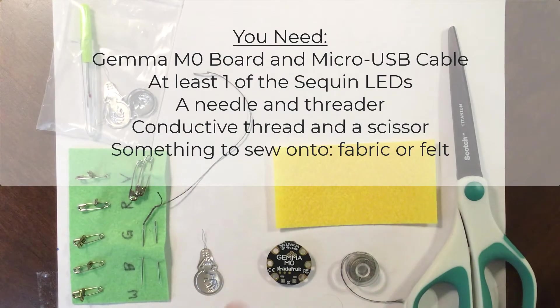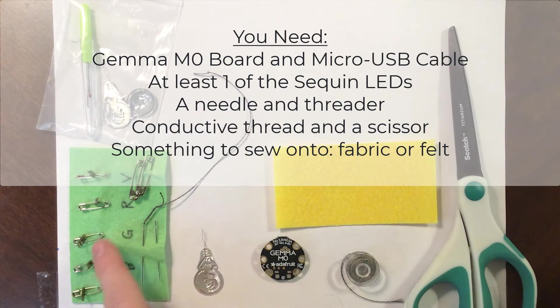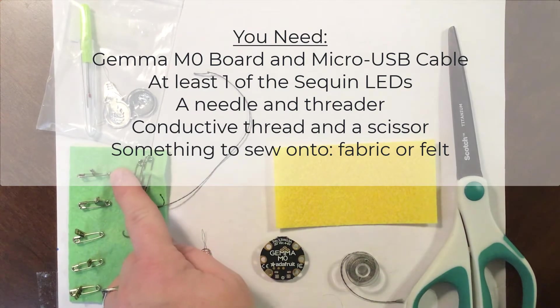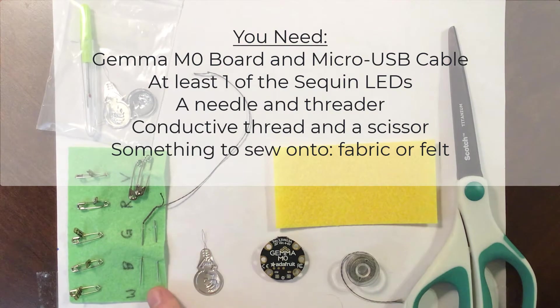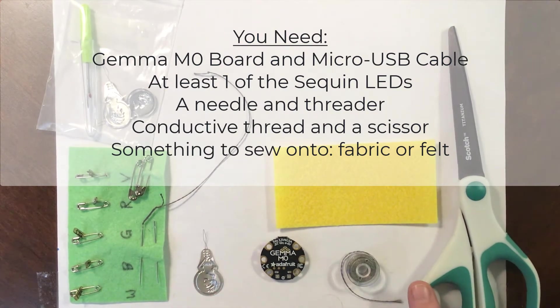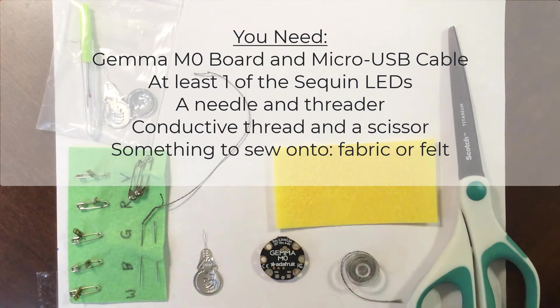First we're going to need our supplies. Here I've got the Gemma board, then I've got my LEDs pinned on a little guide over here, my needles are also here with the threader, I've got my conductive thread and my scissor over here, and I also have a piece of felt that I'll use to sew on this sample project.